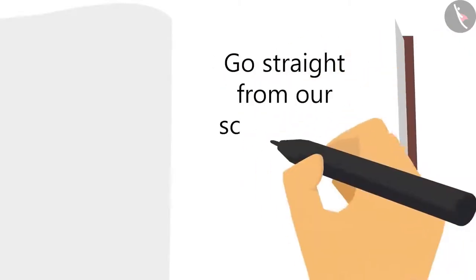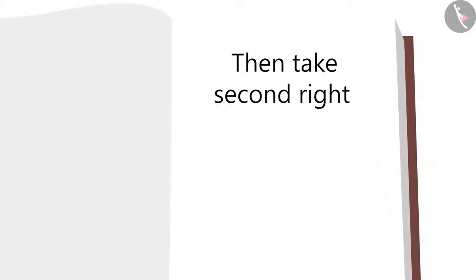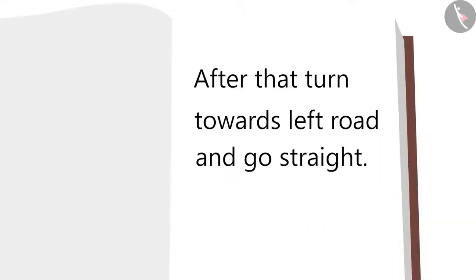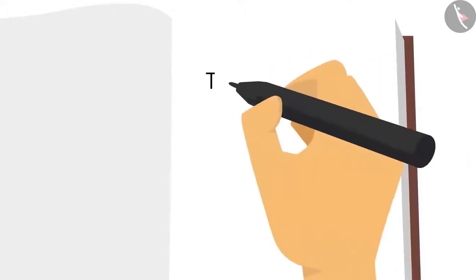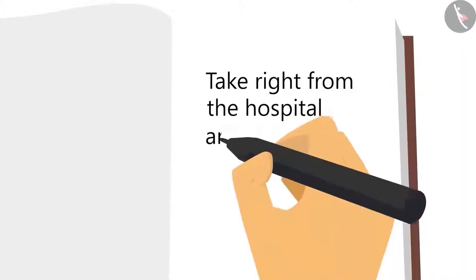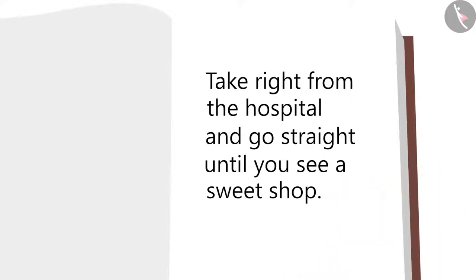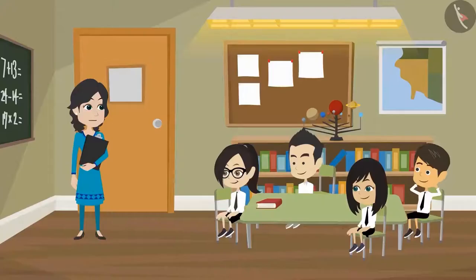Go straight as you exit from the school gate. Then take the second right. After that, turn left and go straight. You will see a hospital. Take a right from the hospital and go straight until you see a sweet shop. My home is right in front of it. Be there at 6 o'clock.